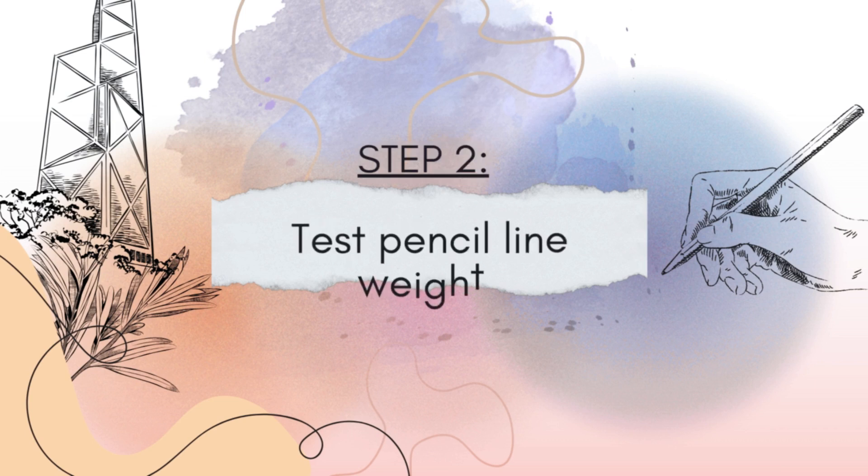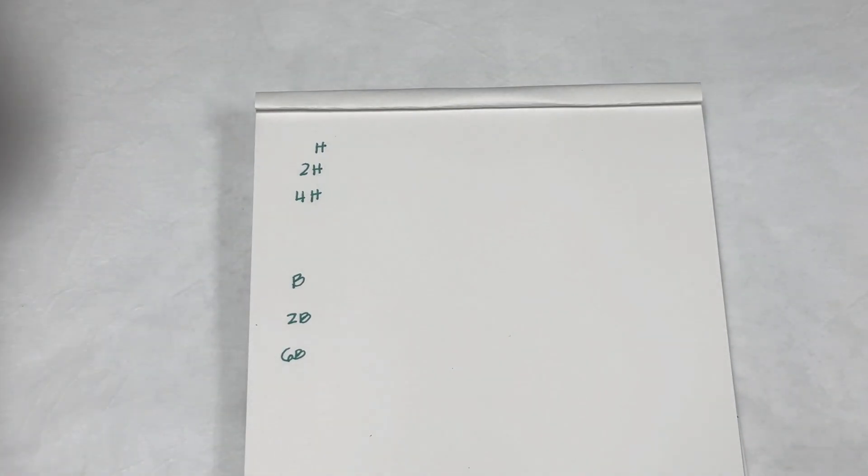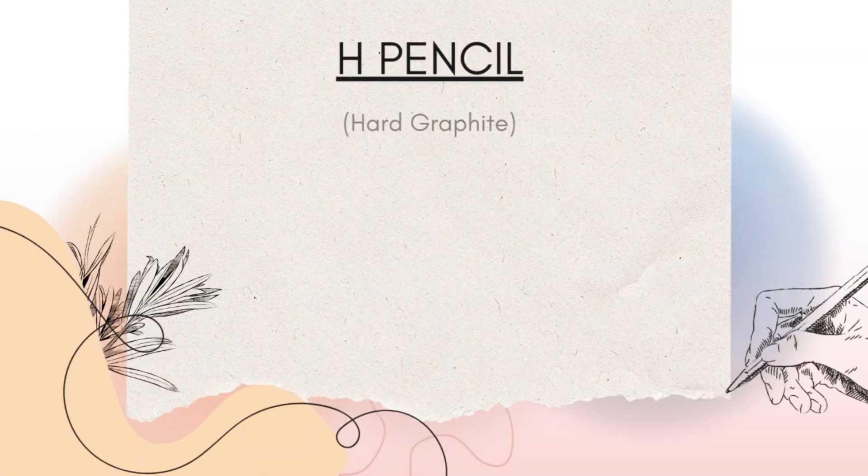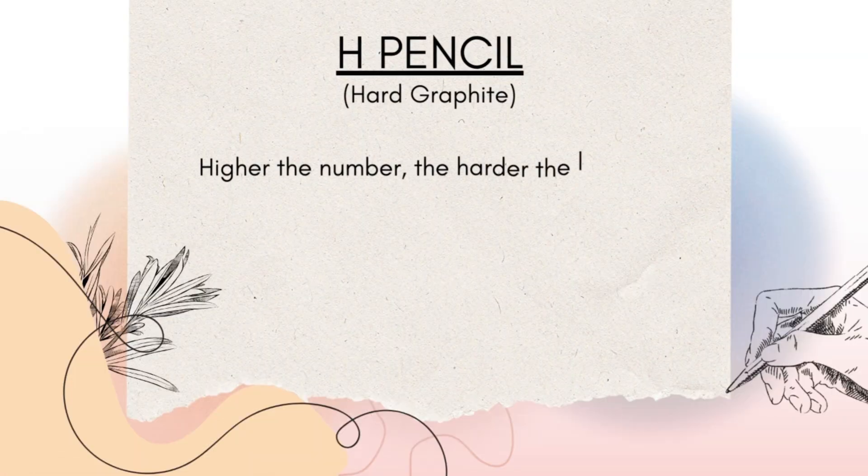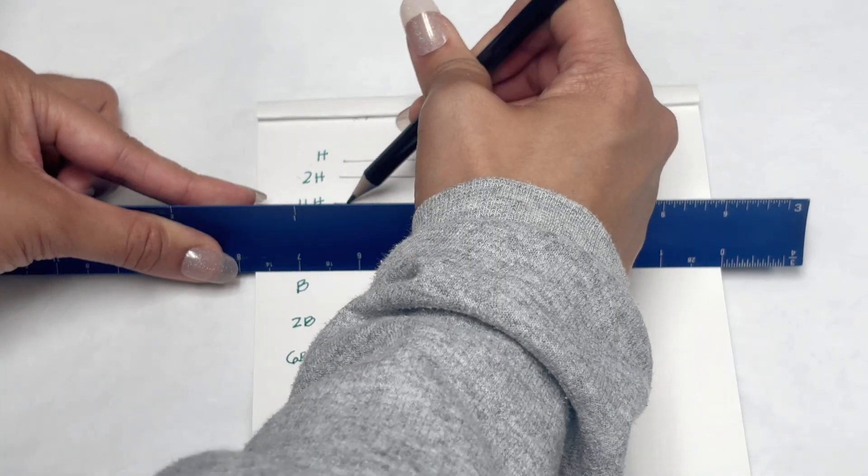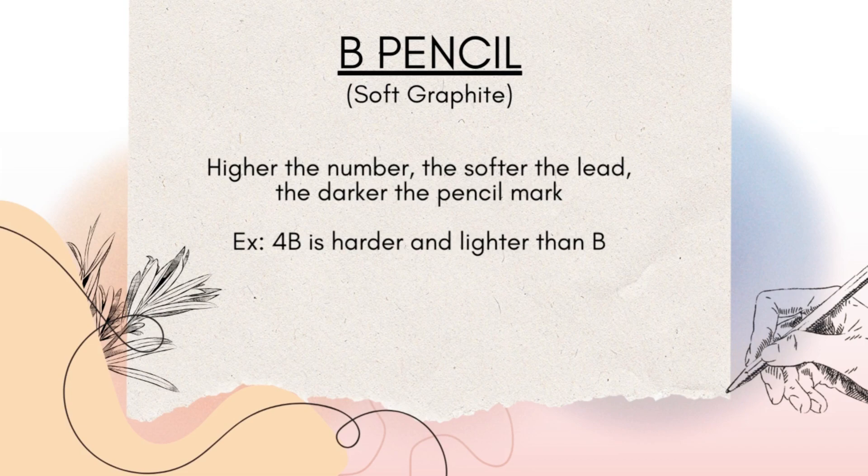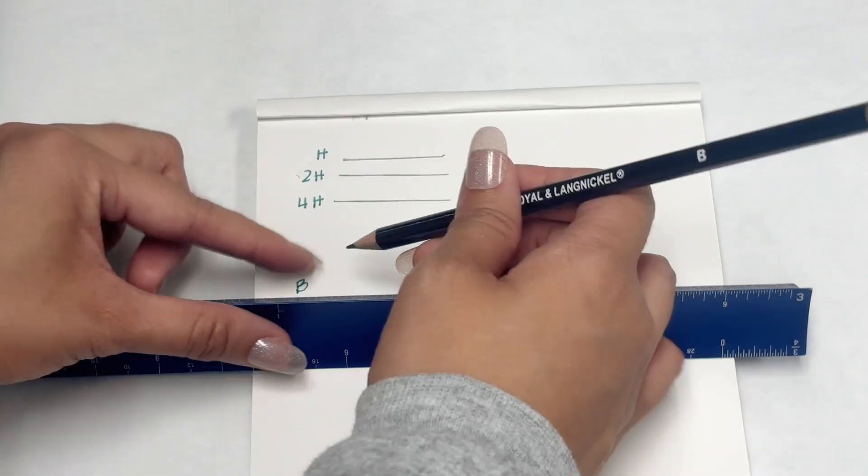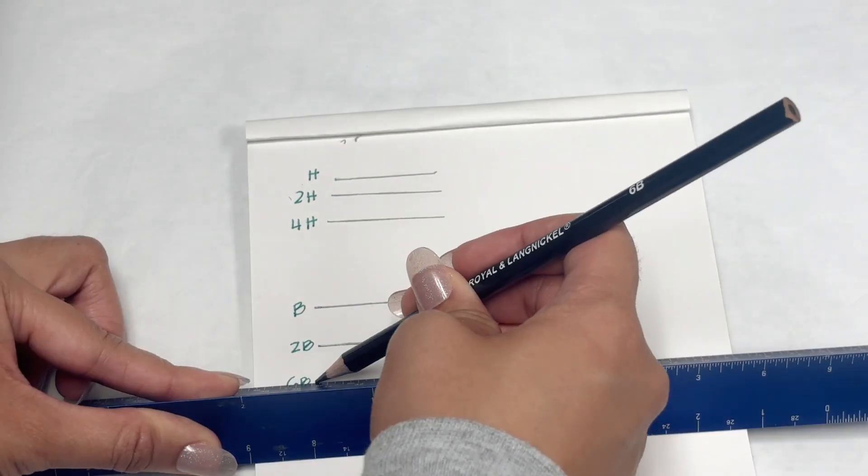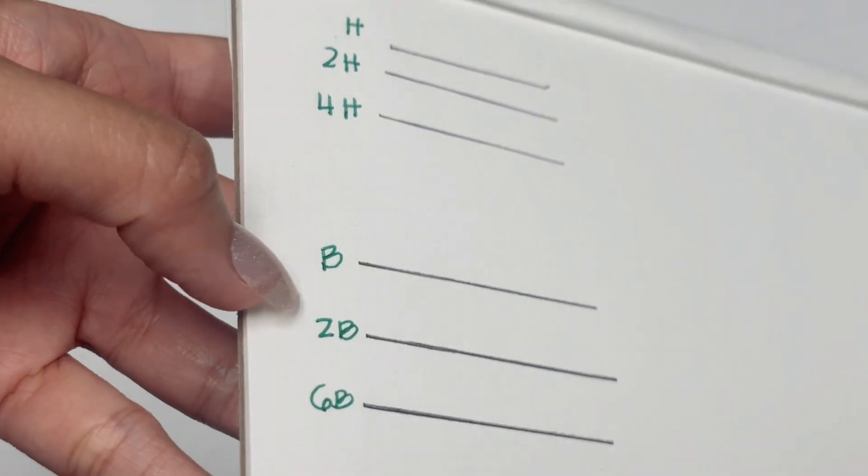Step two: Before you start drawing, test your pencils. H pencils are hard graphite. The higher the number, the lighter and harder the line. It's great for guidelines and fine line details. B pencils are soft graphite. The higher the number, like a 4B or 6B, the darker and softer the lines. It's perfect for bold outlines and shading. You can clearly see here the difference when you test them on paper.